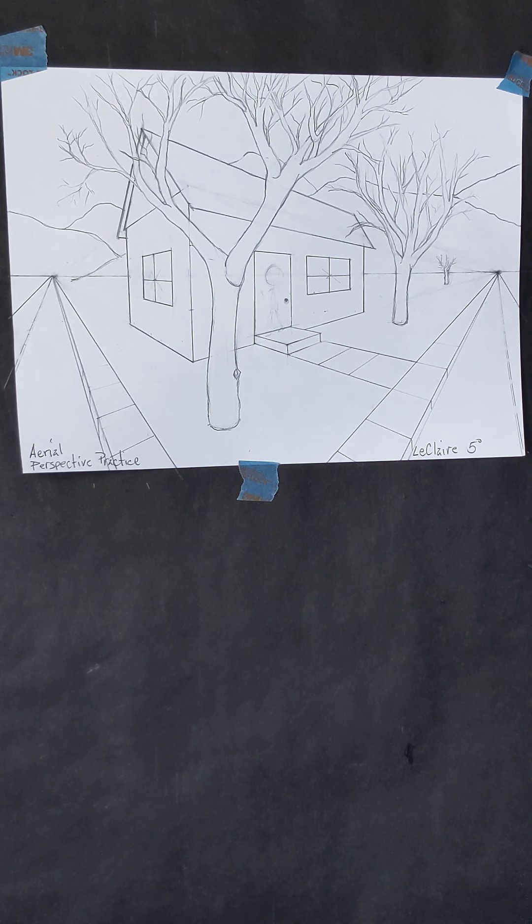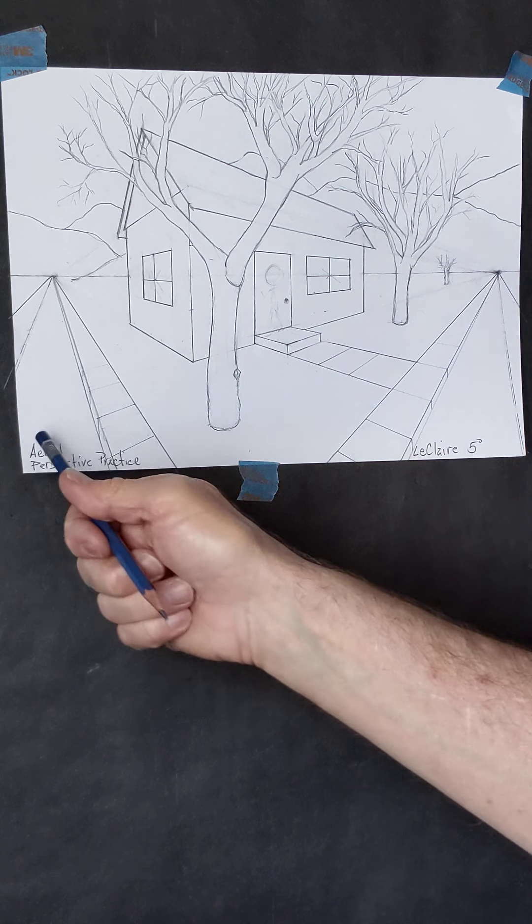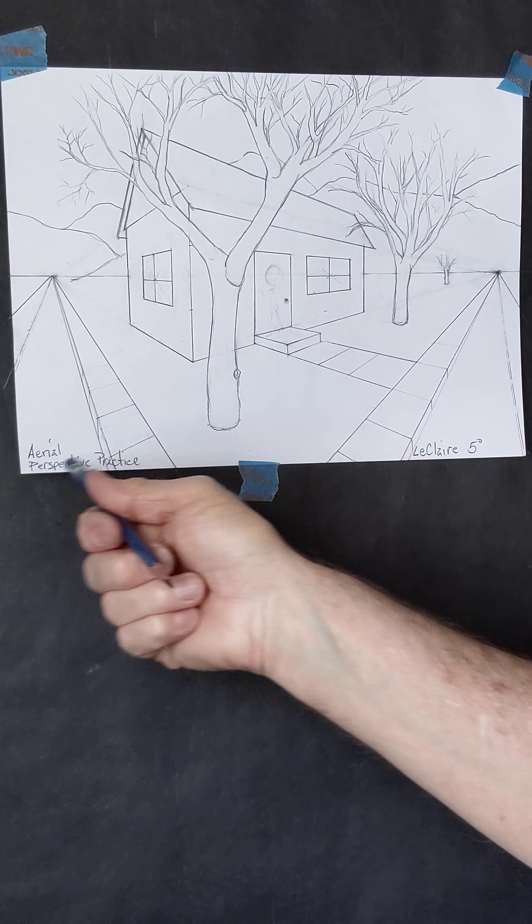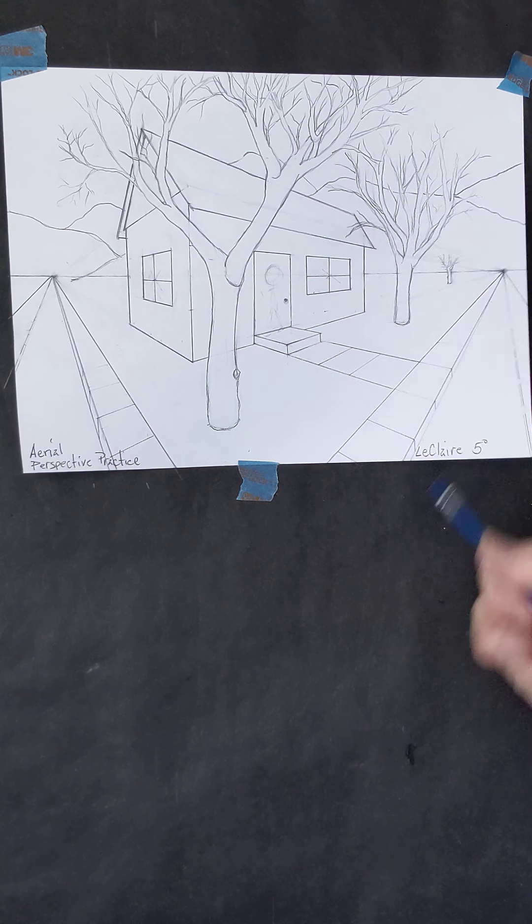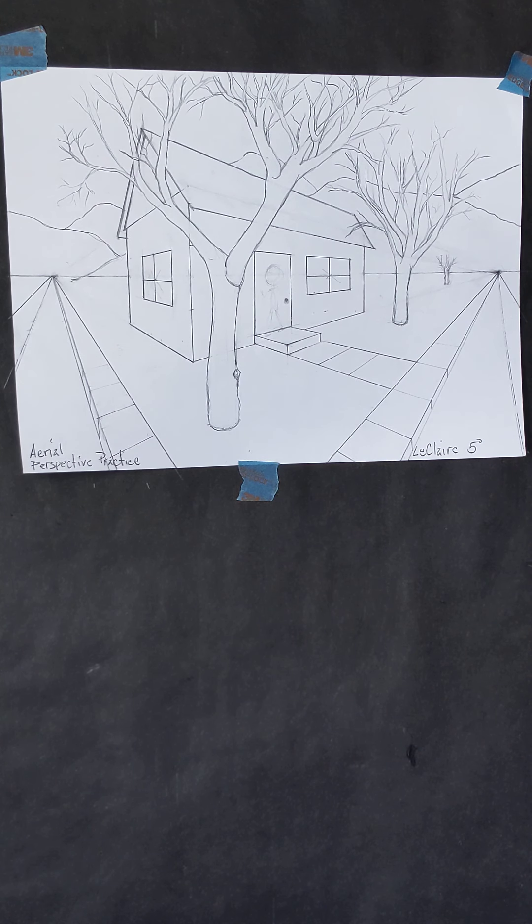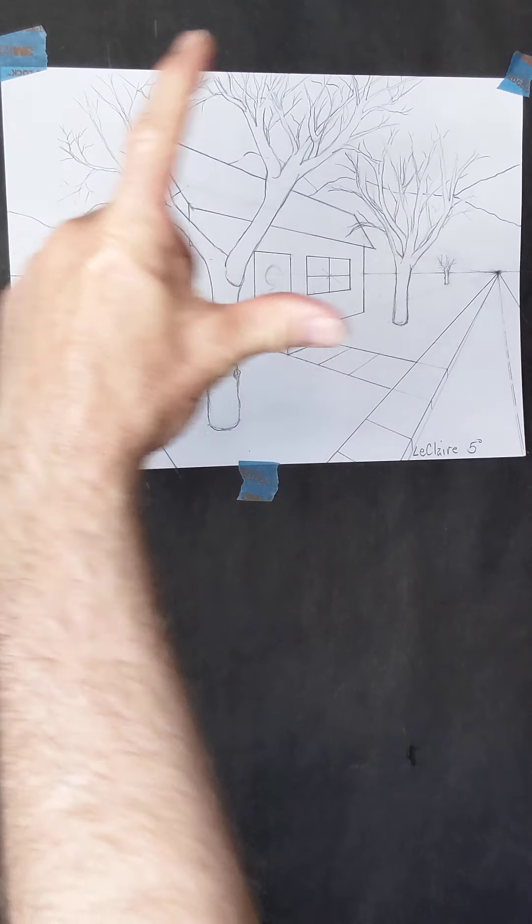All right, so that's the process of taking it farther. I want to remind you, have the words 'aerial perspective practice' along the left-hand side and your name and period number on the right-hand side. Take a photograph of it.